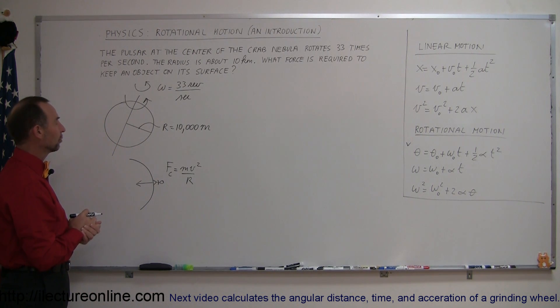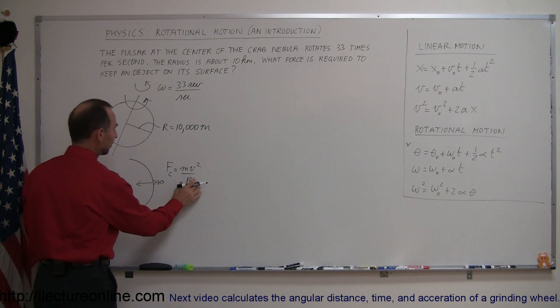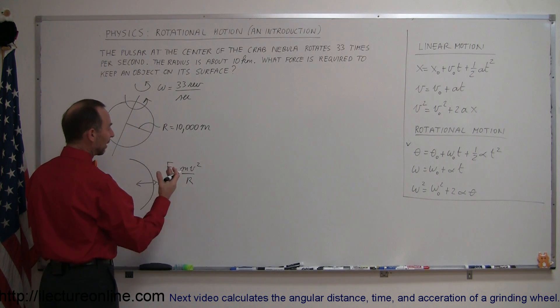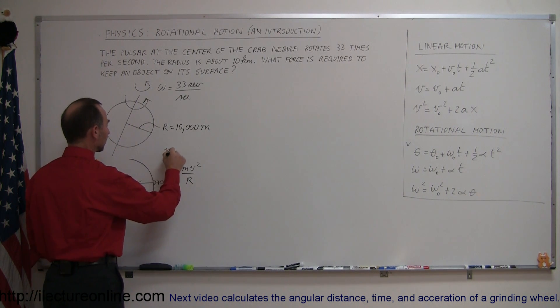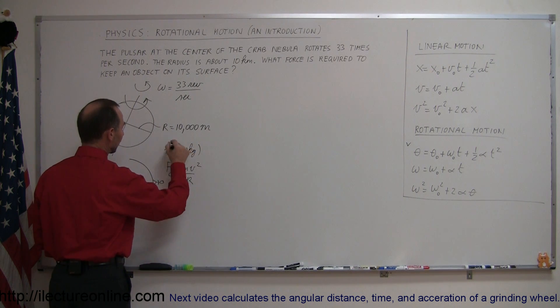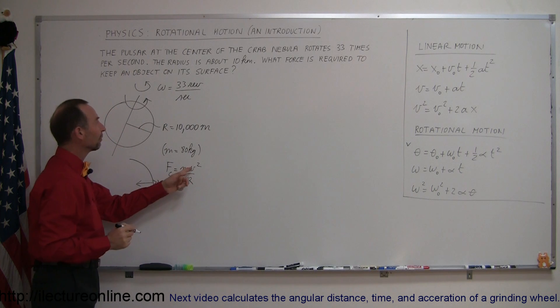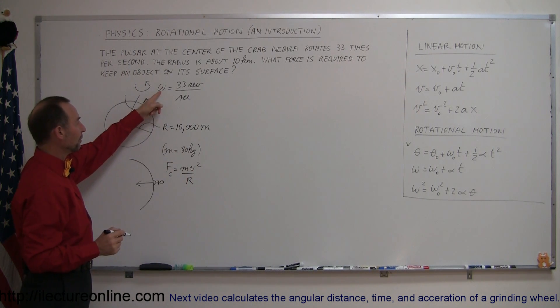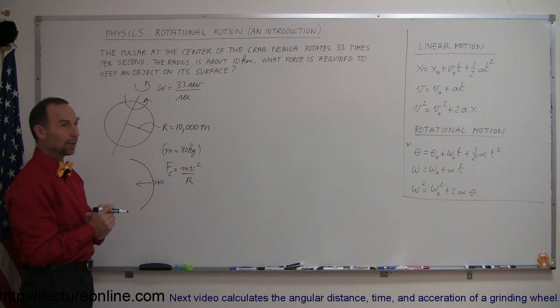To do that, of course we know the radius, let's say we know the mass of the object, we just assume that the mass of a typical person is maybe 80 kilograms as an example, then we need to find the velocity. So somehow we have to convert omega to velocity. Let's do that.